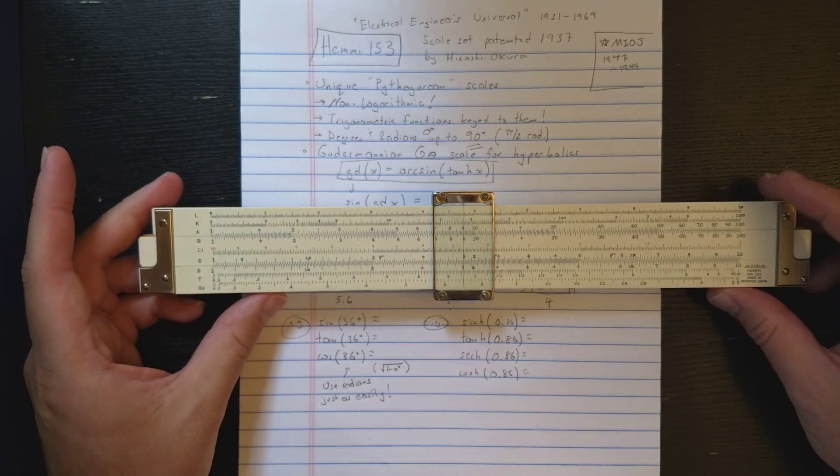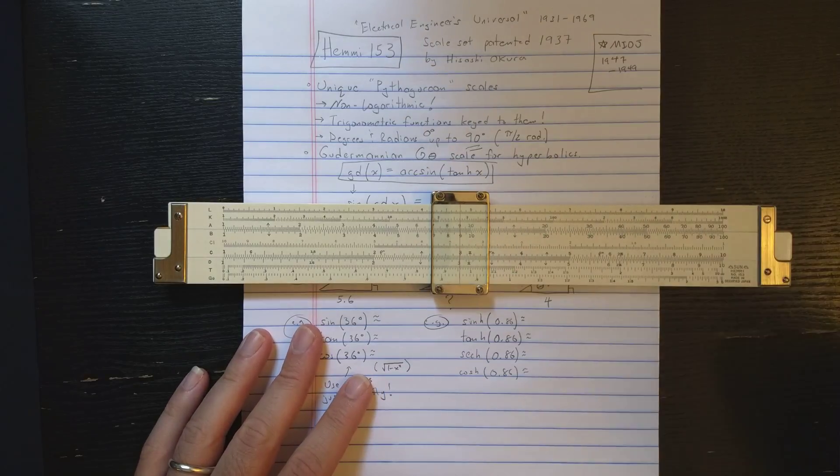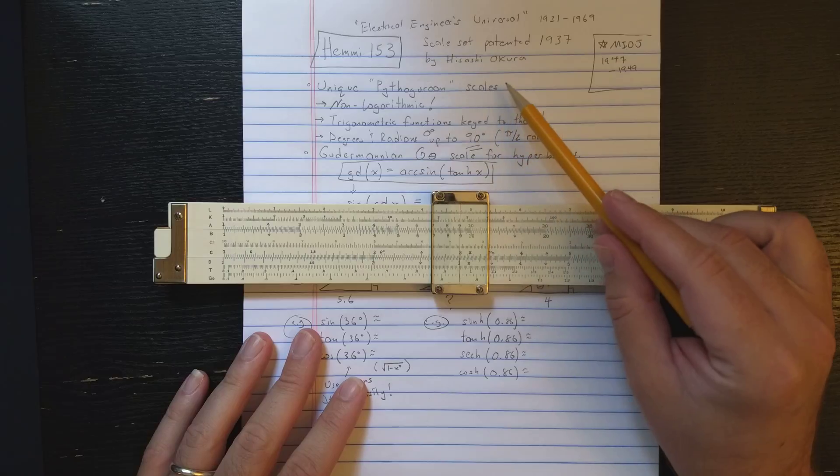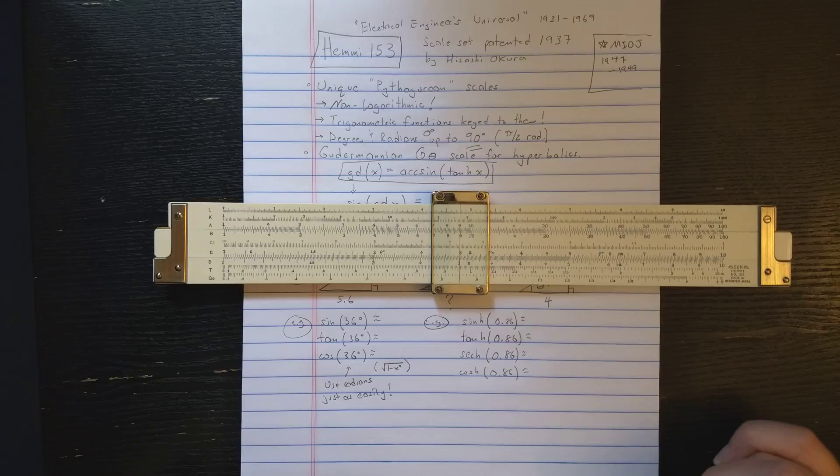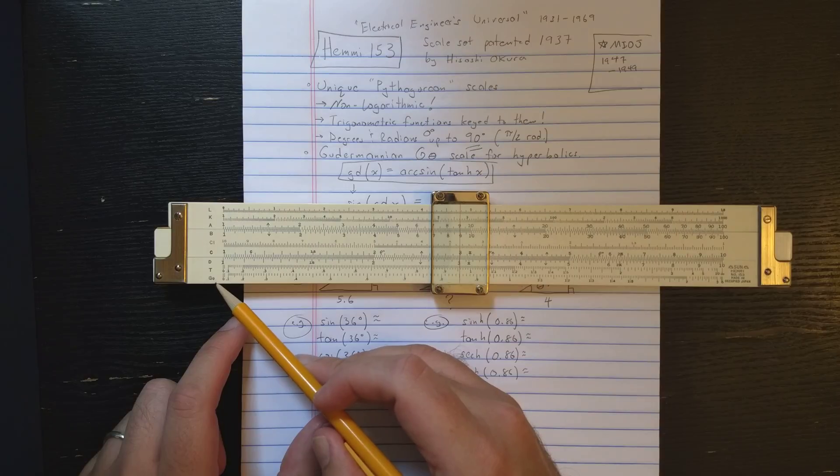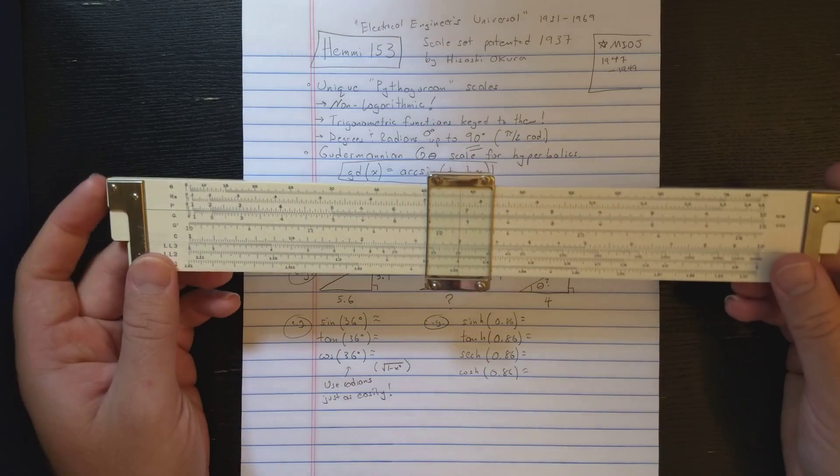Okay, let's talk about the unique scale set. So the scale set actually is patented. There's a U.S. patent from 1937 given to Hisashi Okura of the Hemi company, which specifically describes the scale set and the unique things about the scale set. In particular, his patent covers this G-theta scale.